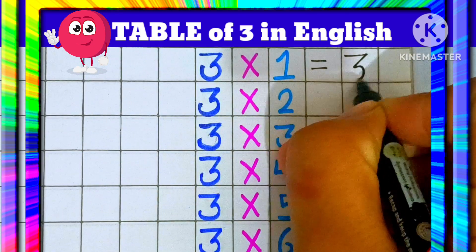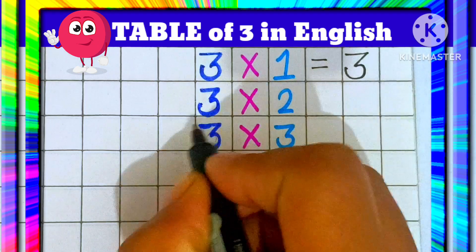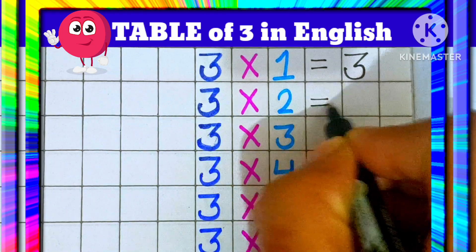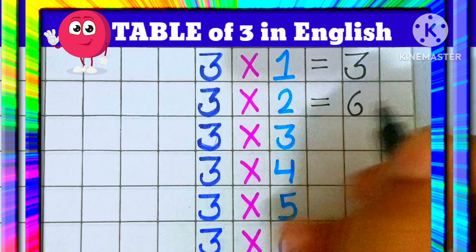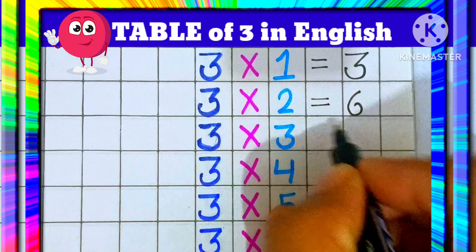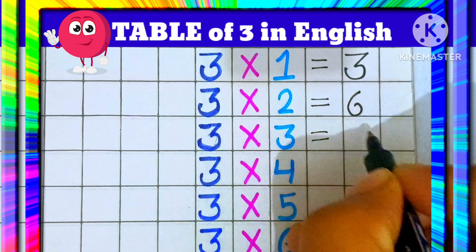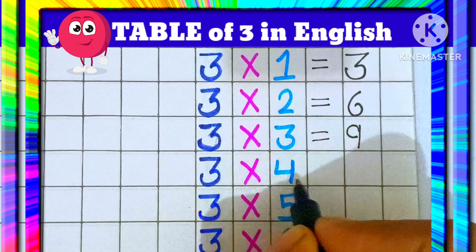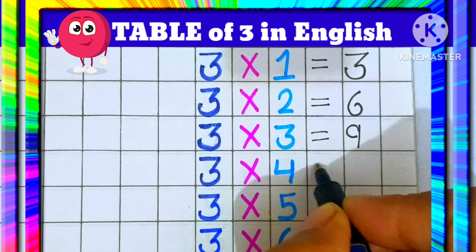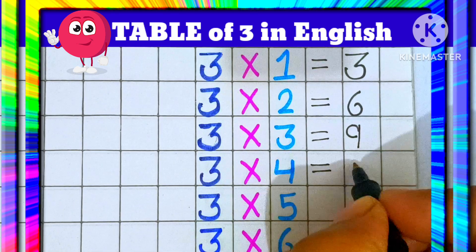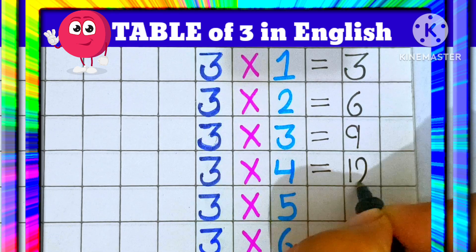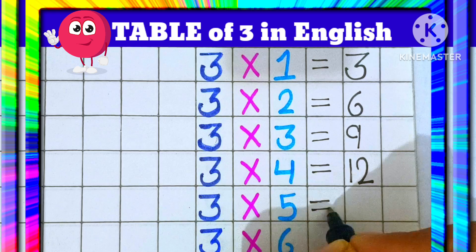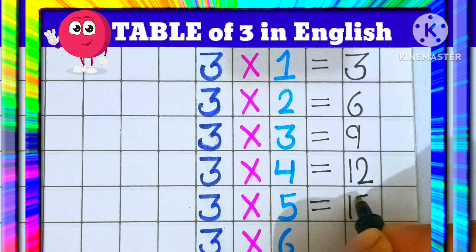3 1's are 3. 3 2's are 6. 3 3's are 9. 3 4's are 12. 3 5's are 15.